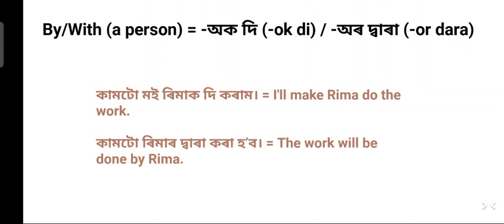Next: 'by' (with a person). In Assamese the instrumental case has endings like '-re', but for people these are not commonly used; instead we use 'ৰ দ্বাৰা' (or dara) or 'দি' (di). Example: 'Kam tu moi Rimak di koram' — I will make Rima do the work / I will cause the work to be done by Rima. 'Kam' means work, 'moi' means I, 'Rimak di' means by Rima, and 'koram' means I will cause to do.